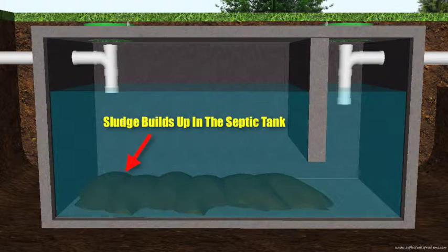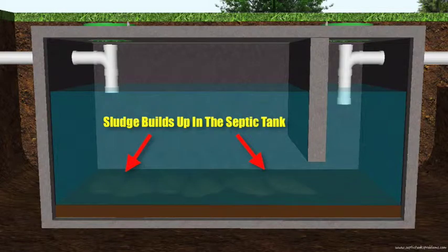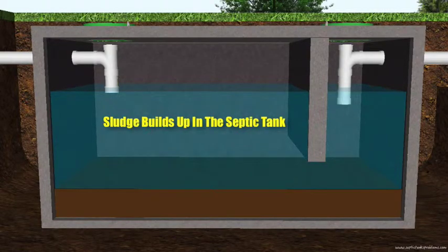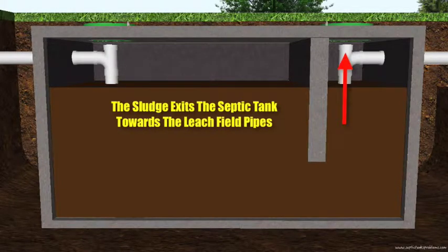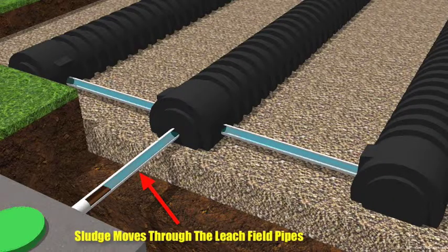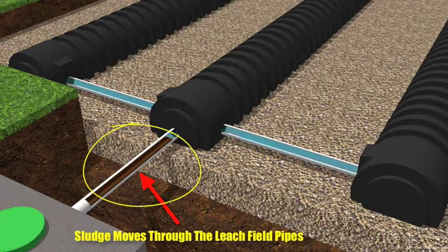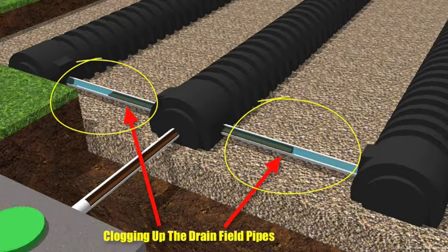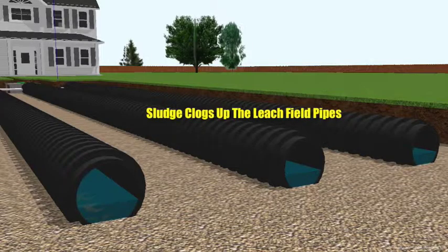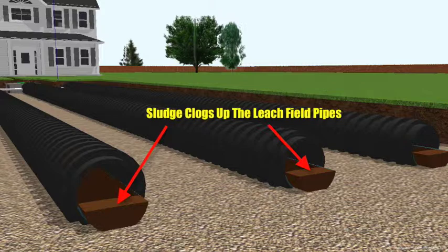The biggest problem with every septic tank is sludge. Over time, solids settle on the bottom of the septic tank. If the tank isn't pumped out regularly, this sludge builds up and eventually exits the septic tank toward the drain field pipes. The sludge makes its way through the small connecting pipes and completely clogs them, restricting wastewater flow. When sludge reaches the drain field pipes, it clogs the entire system, trapping wastewater so it can't be discharged or treated in the gravel or soil.